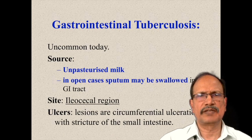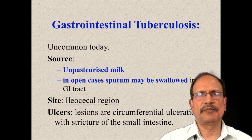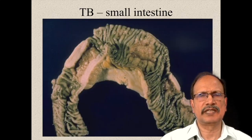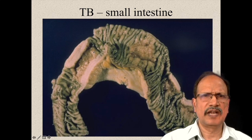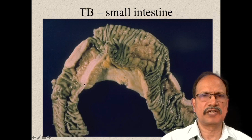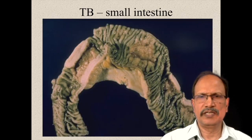Gastrointestinal tuberculosis is uncommon today because of pasteurization of milk, but it can also occur when sputum is swallowed by a person suffering from pulmonary tuberculosis. The usual site of affection is ileocecal, and it produces ulcers and thickening of the wall of the intestine. These ulcers are circumferential. Appreciate the presence of normal mucosa here and loss of mucosal folds in the affected area, converted to a smooth area because of ulceration. The wall is enormously thickened because of granuloma formation, inflammation, and fibrosis. Because of this fibrosis, there is narrowing of the lumen and the person may suffer from intestinal obstruction.